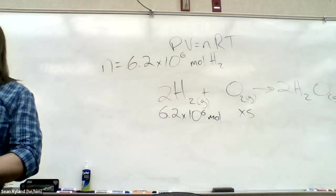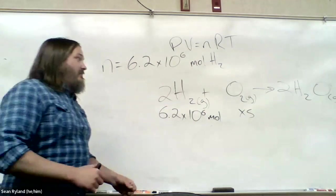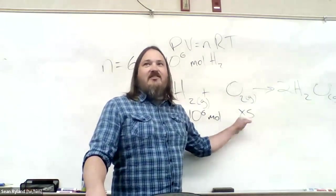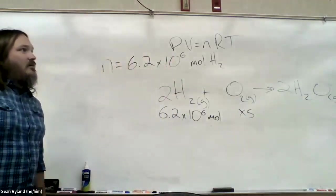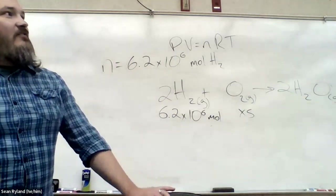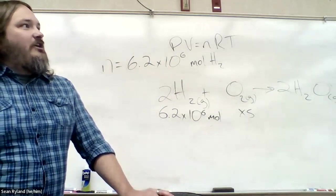But that's usually a safe assumption. If we're doing a reaction in the open atmosphere, in general, we're not noticeably changing the concentration of oxygen in the atmosphere. So we can say that we're not going to run out of oxygen. So if this reaction releases 285.8 kilojoules per mole of hydrogen, how much energy was released?